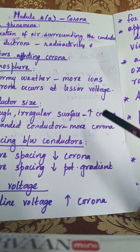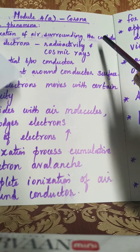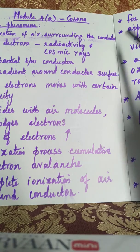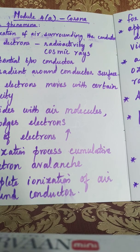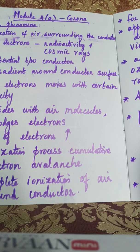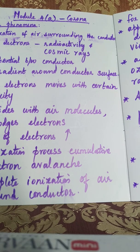To summarize: the ionization of air surrounding the conductor is called corona. The effects of corona are a faint violet glow, hissing noise, ozone production, power loss, and radio interference. Corona occurs when the voltage exceeds the critical disruptive voltage; for air the critical potential gradient is 30 kV per centimeter.